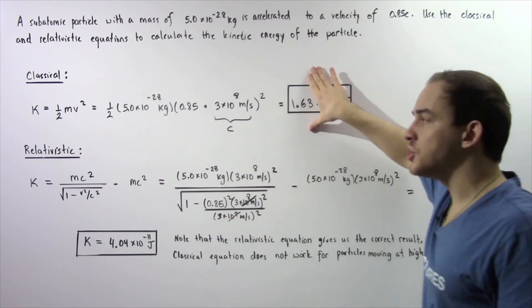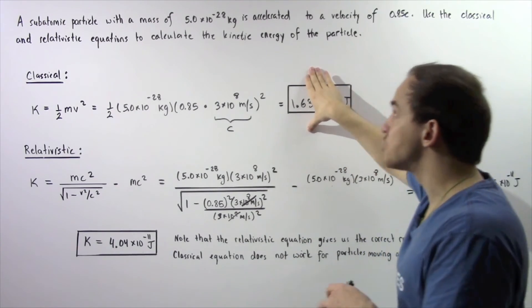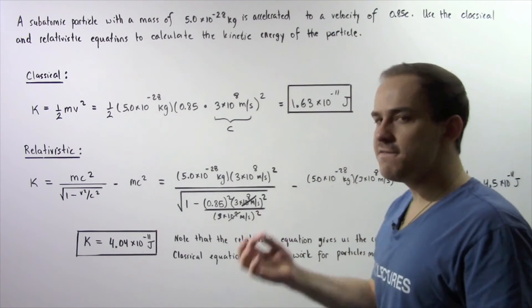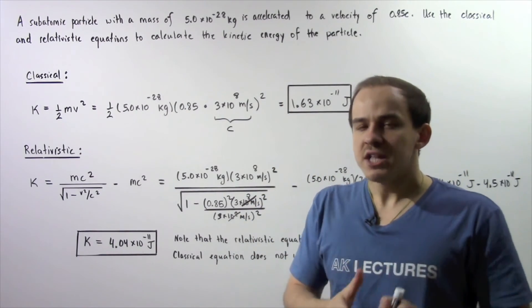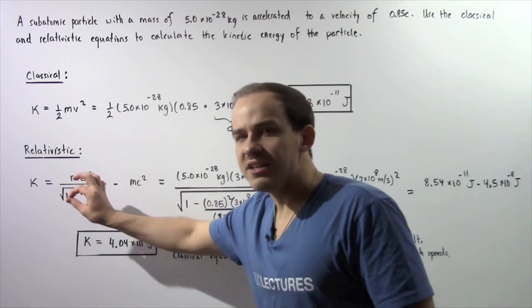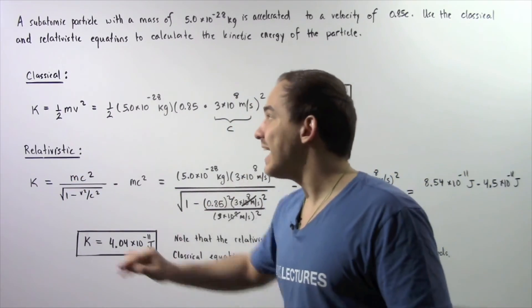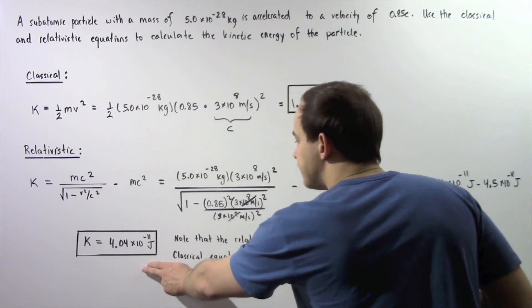In fact, the classical equation does not give us the correct value because this particle has a very high velocity. If the velocity of the particle is close to the velocity of light, then we must use the relativistic equation and not the classical equation. This is the correct value.